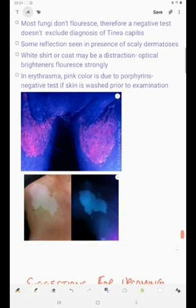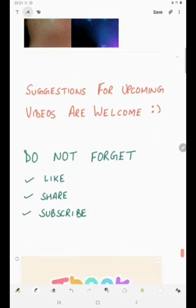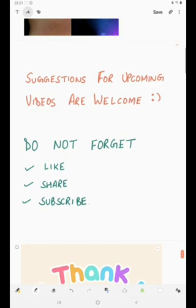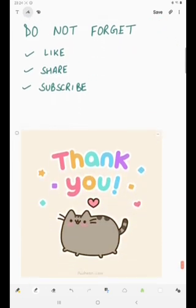Here are two photos for you to remember. This is erythrasma with coral pink type of color. And this is vitiligo where we can clearly see that the lesion is being accentuated. I thank you all for watching this video. Any suggestions for the upcoming videos are welcome. Whatever topics you might want me to discuss, they will be very welcome. Do not forget to like, subscribe, and share. Thank you.